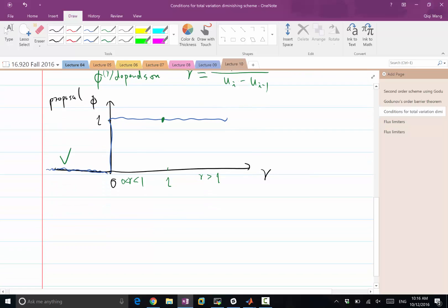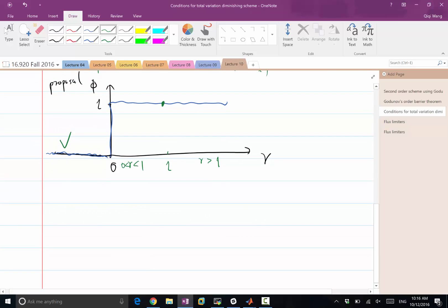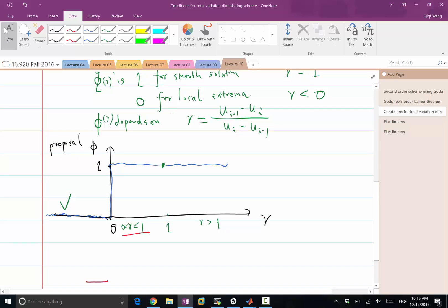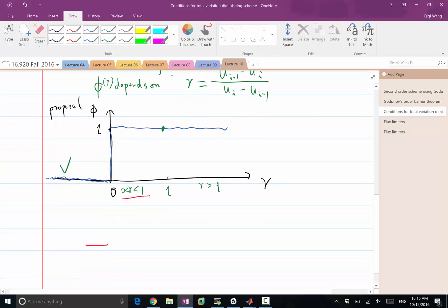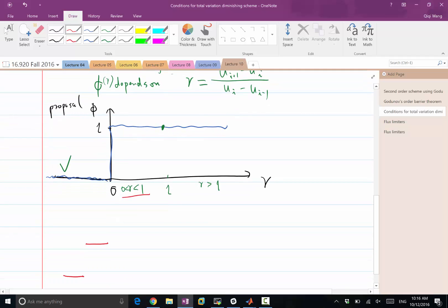So let's first consider this case when r is between 0 and 1. So just to draw this case, r is less than 1 means, let's look at the definition. It means the difference between ui and ui minus 1, the difference between ui plus 1 and ui is less than the difference between ui and ui minus 1. So the slope is higher on the left than on the right. So ui, ui minus 1, and ui plus 1. So this is the case when I have r between 0 and 1.